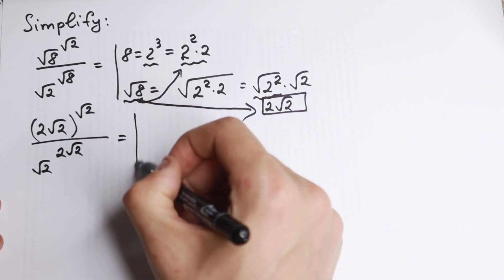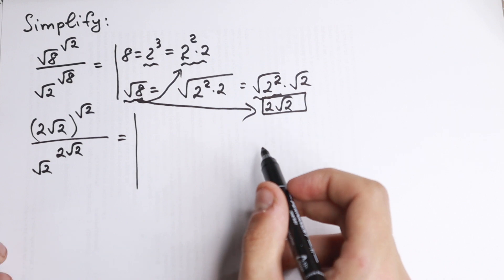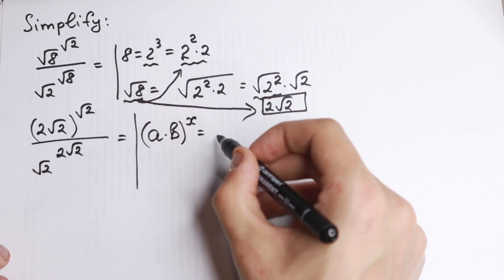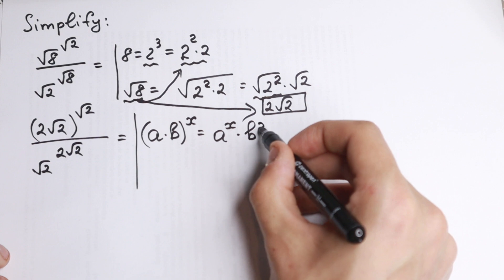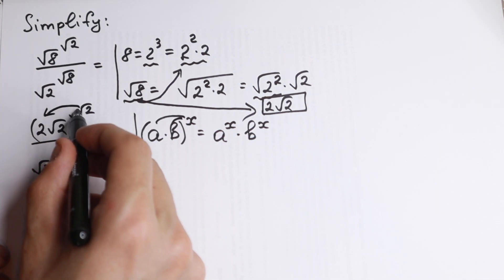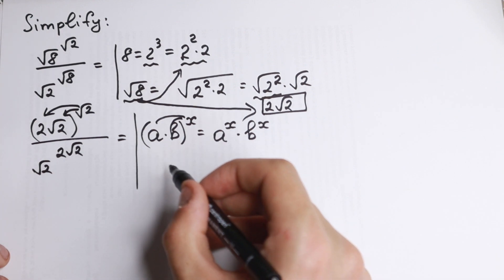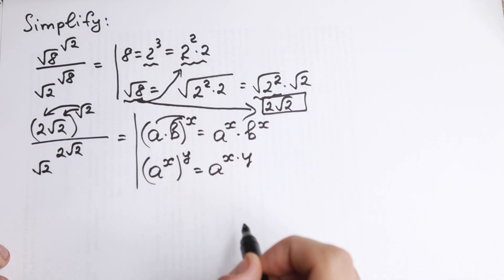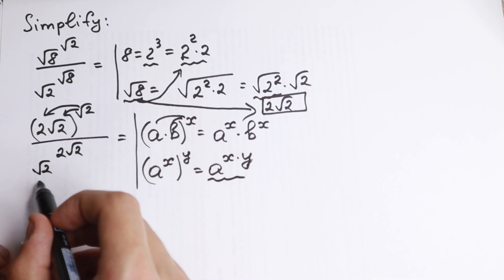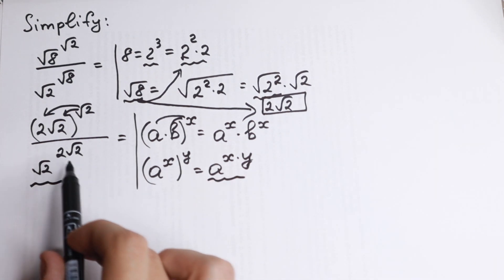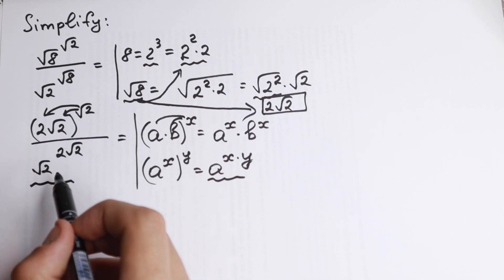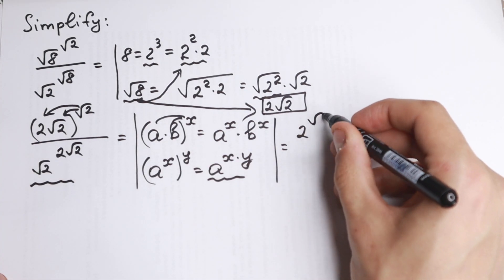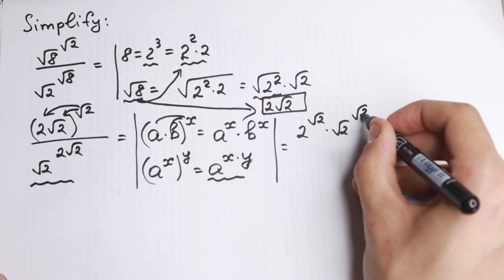Now I want to show you two important properties we need here. First: if we have (a times b) to the power x, this equals a to the power x times b to the power x — we raise both elements to that power. Second: a to the power x, raised to the power y, equals a to the power x times y. Using the first rule, we bring 2 into parentheses and raise to the power square root of 2. So we will have 2 to the power square root of 2, times square root of 2 to the power square root of 2. This is our numerator.